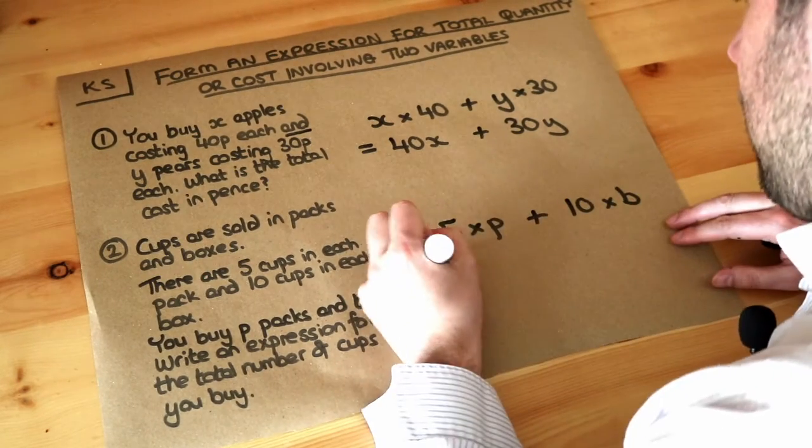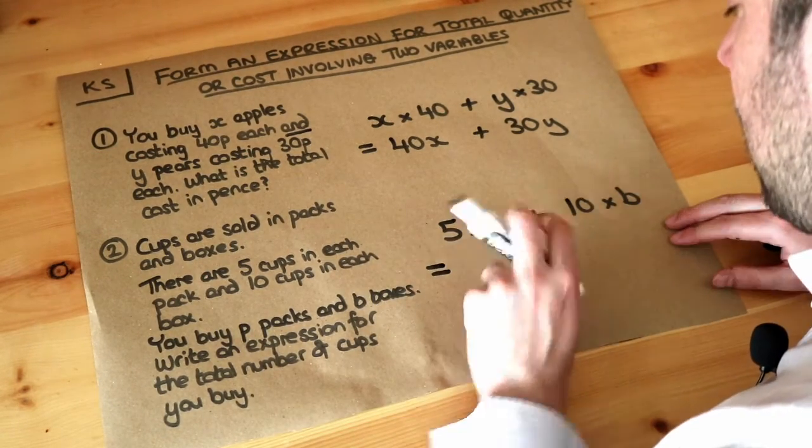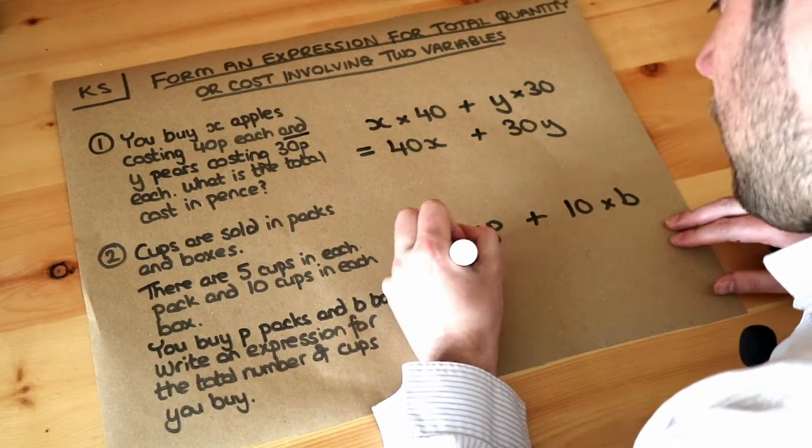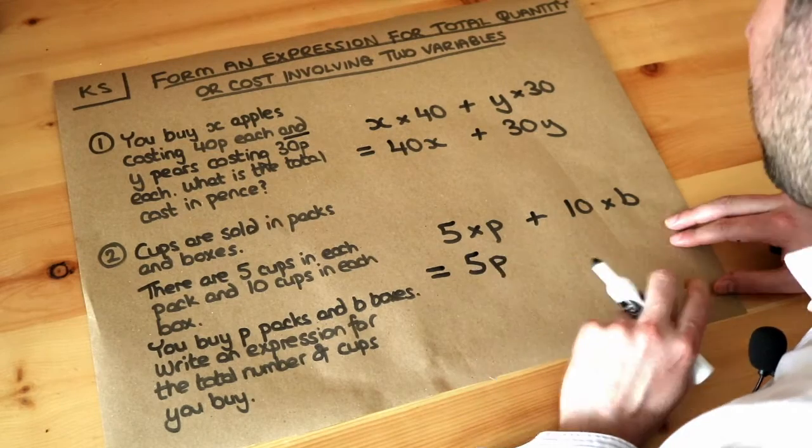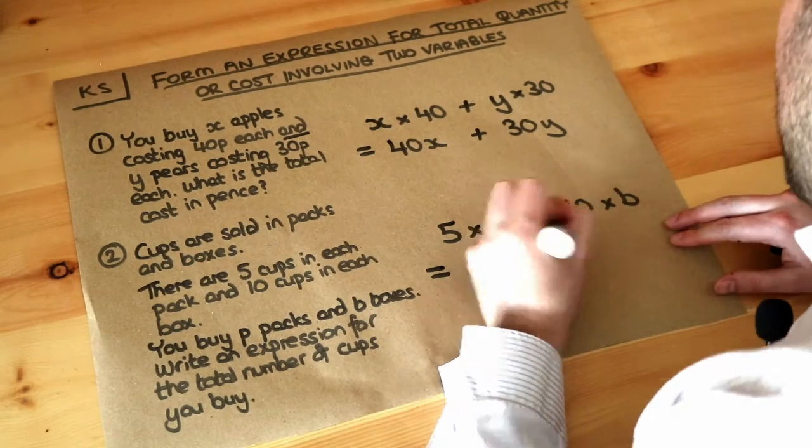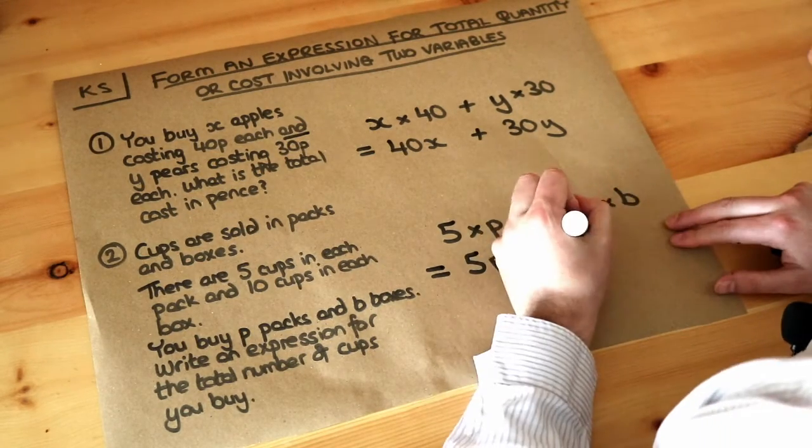And then we can just simplify this. So 5 times p, we can ignore the times symbol because 5p just means 5 times p in algebra. They're next to each other means you're timesing them together. And then we've got 10 lots of b which we can write as 10b.